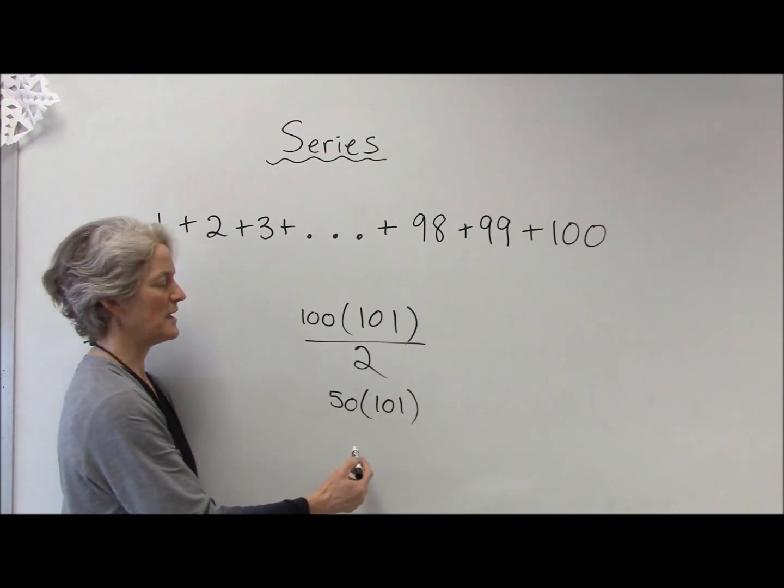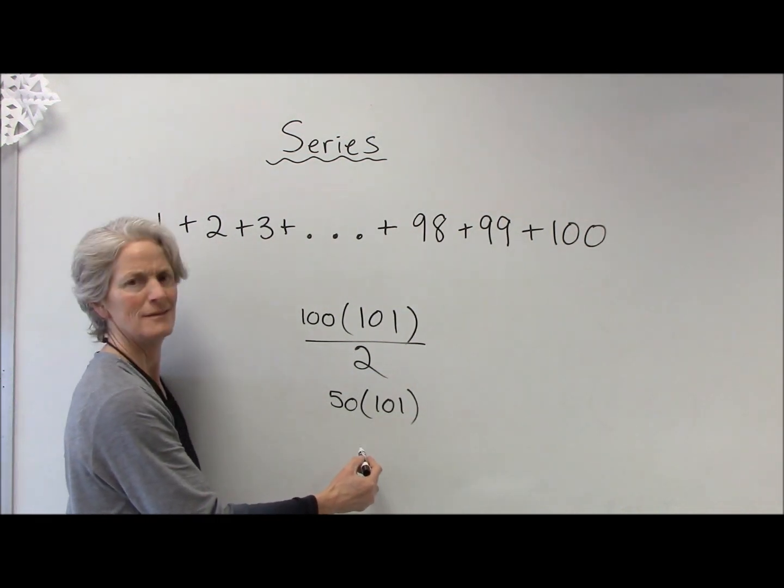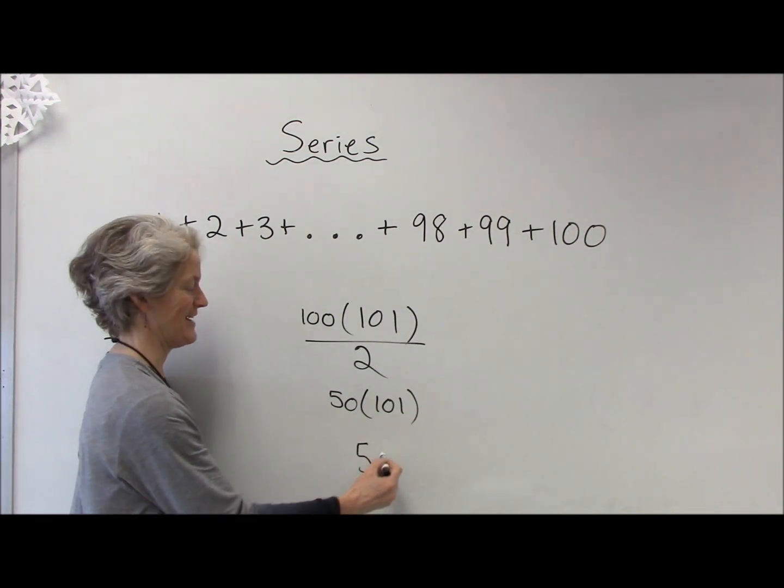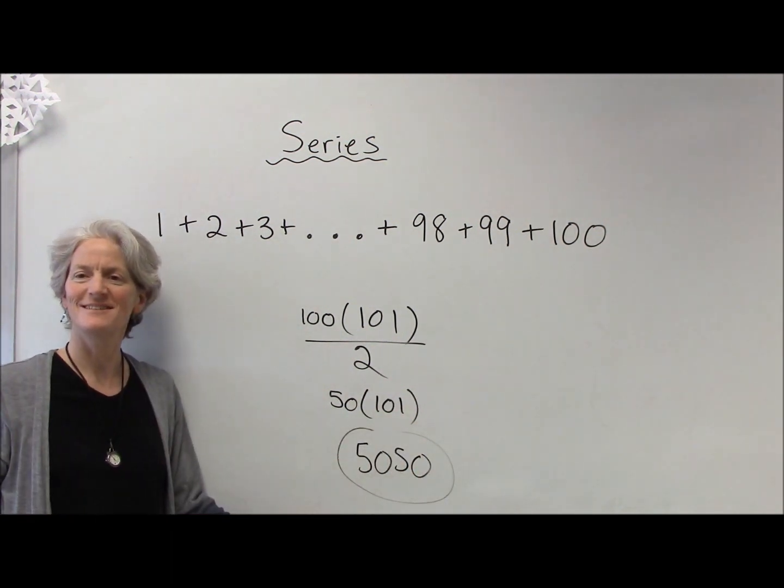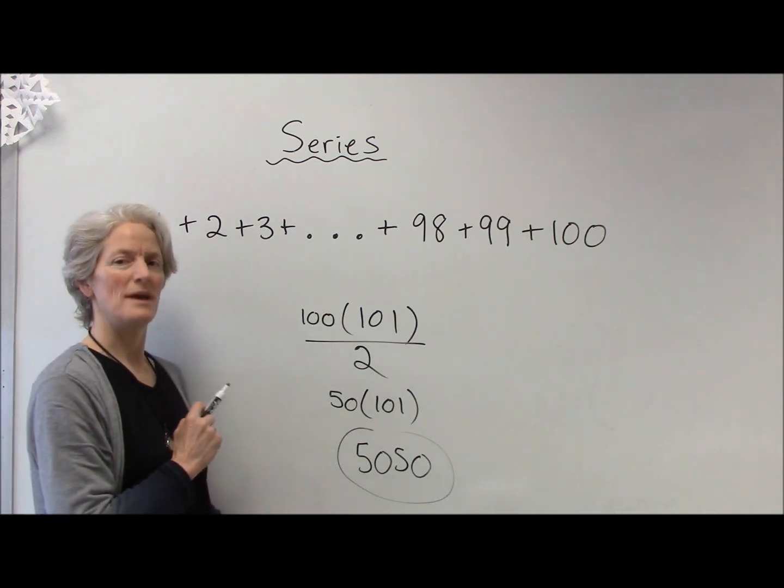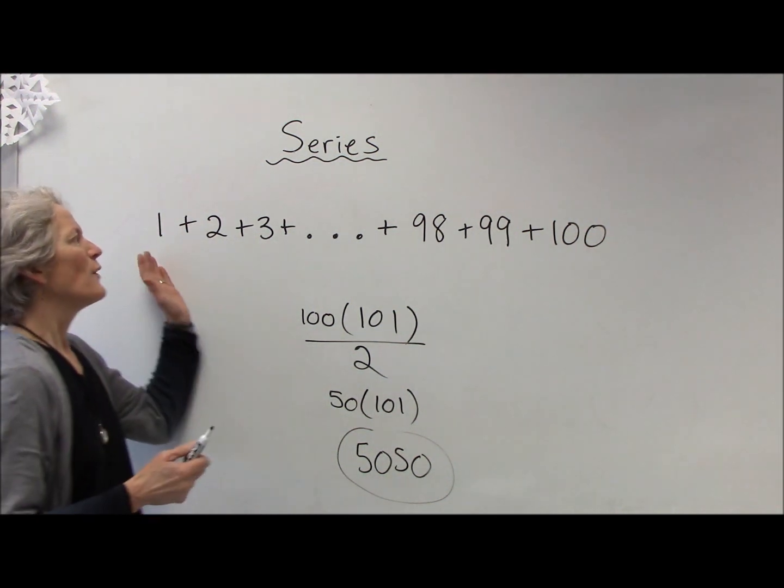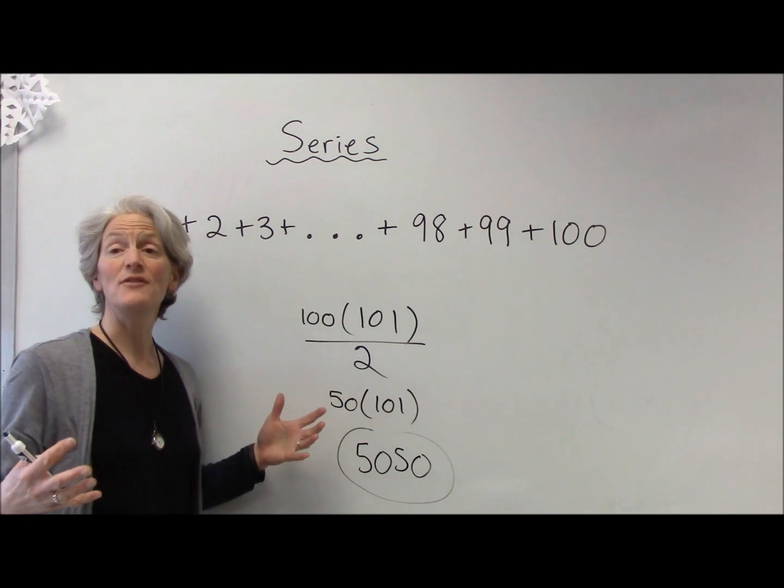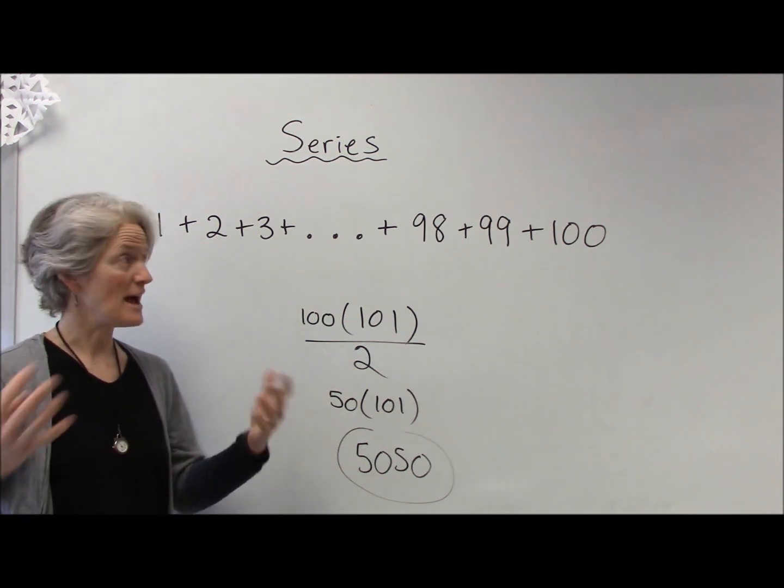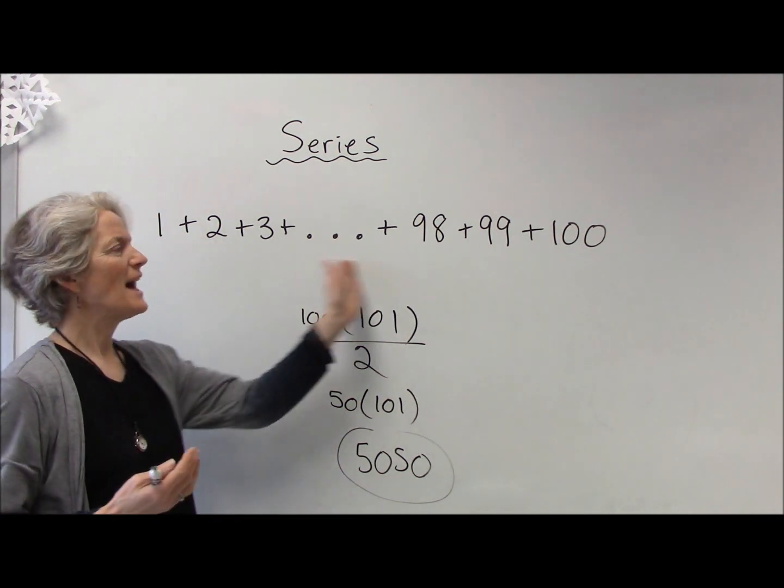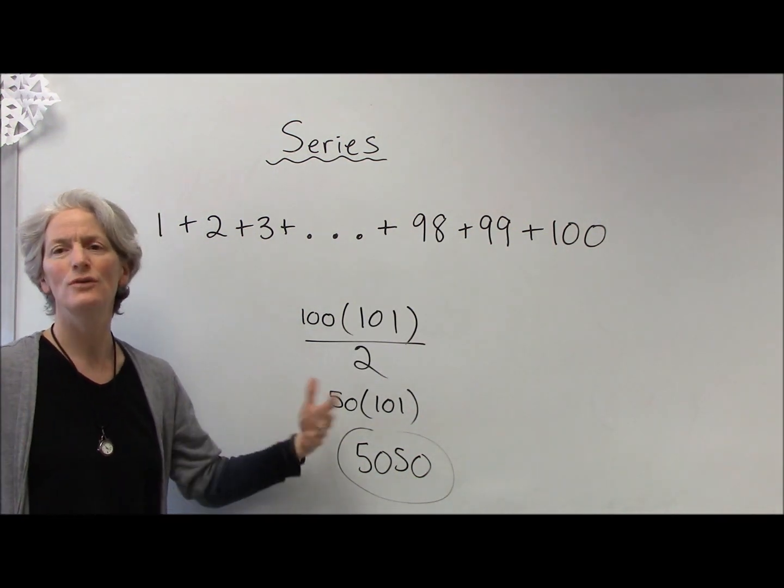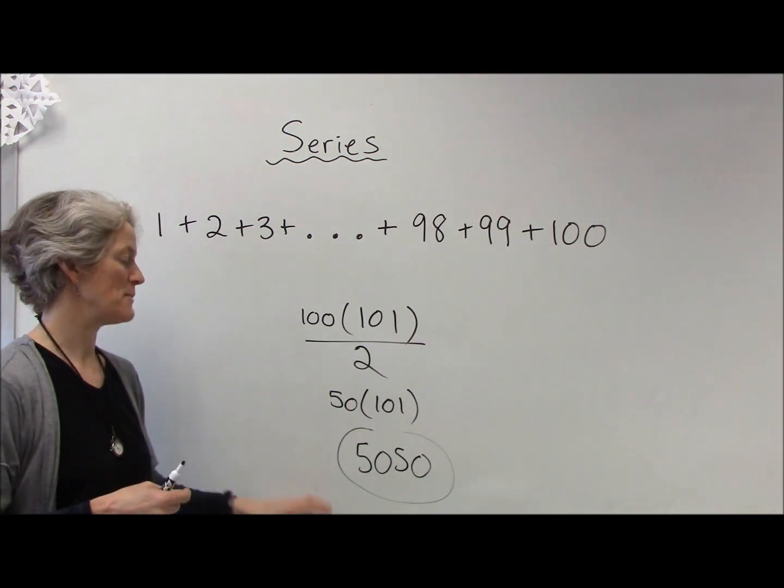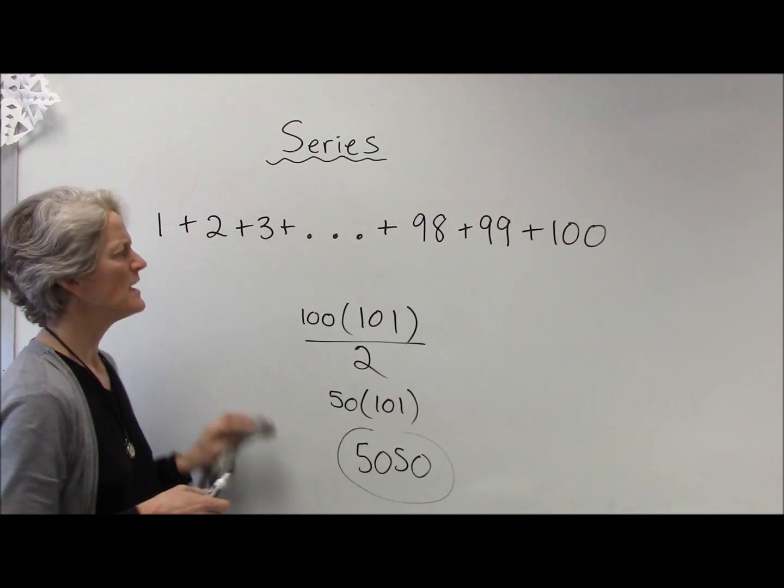Which gives me a sum of 5050. Isn't that just brilliant? And when you see it, of course it makes sense. So what Gauss pretty much discovered was a shortcut that we now can use to add up a series that might be too big for us to add by hand.